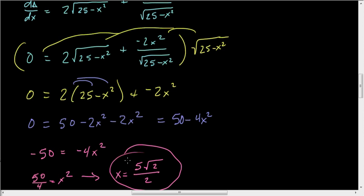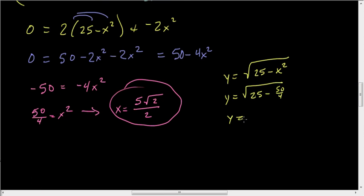Now remember, y equals the square root of 25 minus x squared. x squared was 50 over 4, so y equals the square root of 25 minus 50 over 4. 100 over 4 minus 50 over 4 is 50 over 4. y equals the square root of 50 over 4, which again is 5 root 2 over 2.